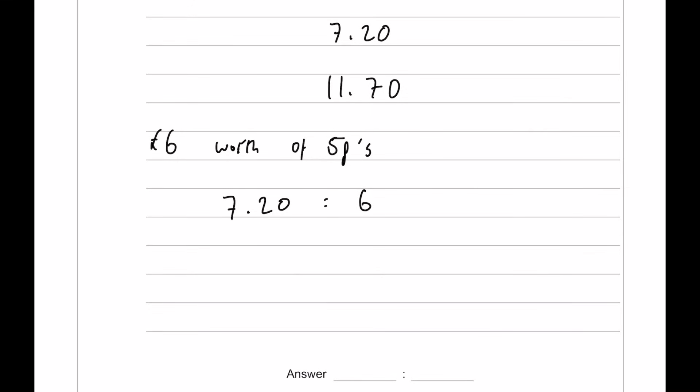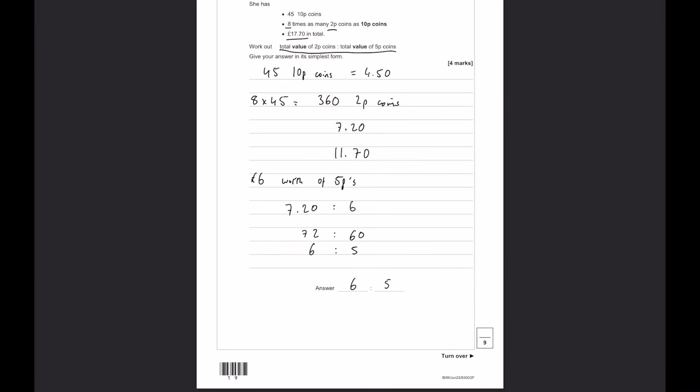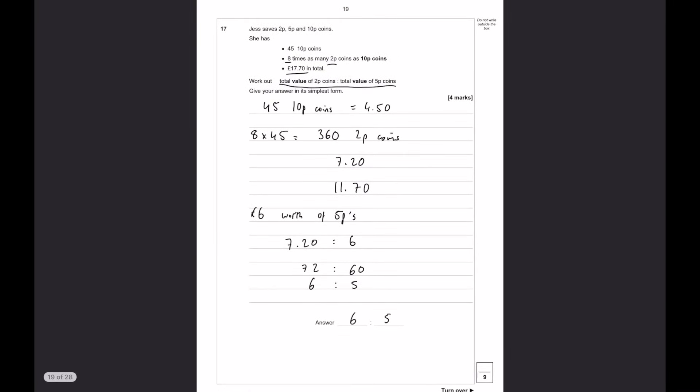So, now that we know how much the 5ps are worth, if you actually look at the question, we don't need to work out how many 5ps that is, because the total value of the 2p coins, £7.20, and the total value of the 5p coins is 6. Now, to give your answer in its simplest form, technically speaking, we don't want to have decimals in our ratios. So, if we multiply both of these things by 10, we're going to get 72 and 60. Then we can divide both of these things by 12, which is going to be 6 to 5. And that is your final answer. Again, a 4-mark question that just takes a bit of breaking down, and then you are done.